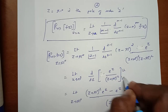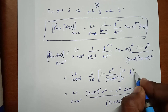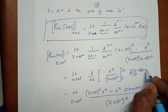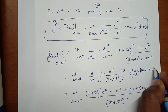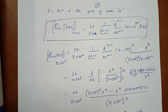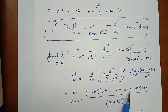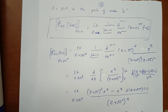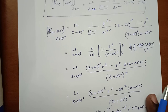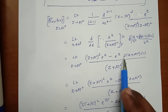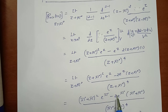We differentiate e^z / (z + πi)² using the quotient rule (u/v)' = (v·u' − u·v') / v². Here u = e^z and v = (z + πi)². This gives: [(z + πi)² · e^z − e^z · 2(z + πi)] / (z + πi)⁴. We then evaluate the limit as z → πi.